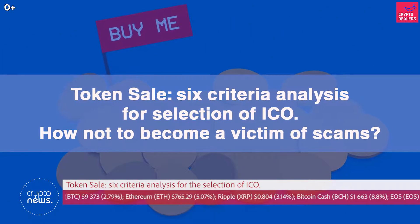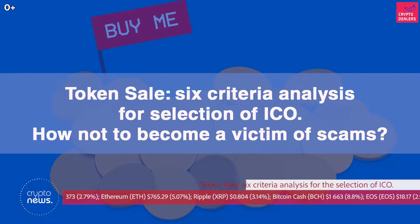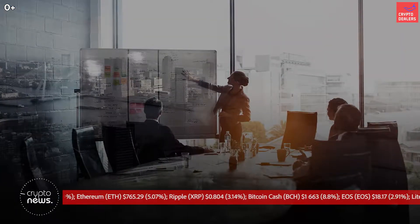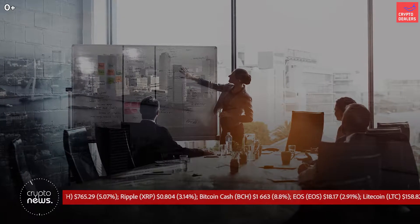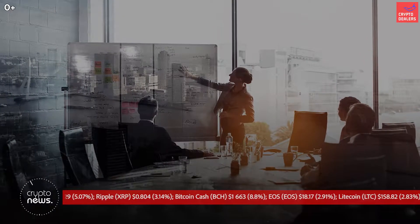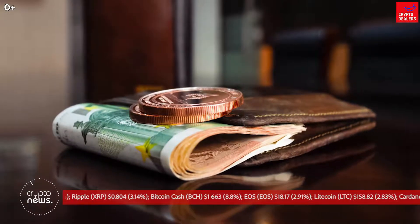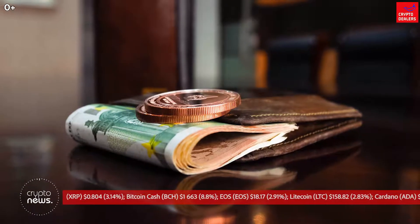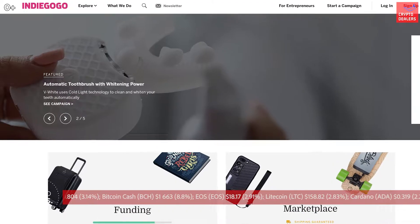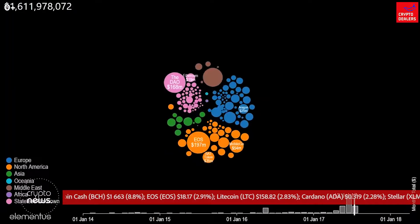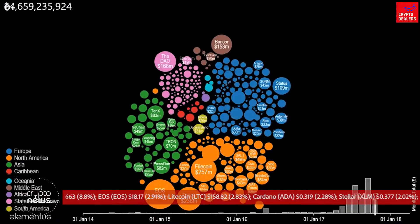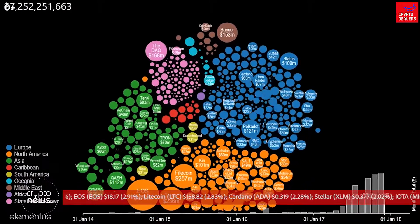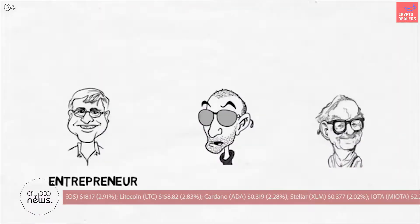Token sale: six criterion analysis for the selection of ICO. One of the ways to raise capital for a startup is a crowdfunding campaign. With the development of the internet, the method has become a popular alternative to usual stock investment, thanks to platforms such as Indiegogo and Kickstarter. In the crypto community, the attraction of people's money has also gained great popularity, with dozens of ICOs starting every day.